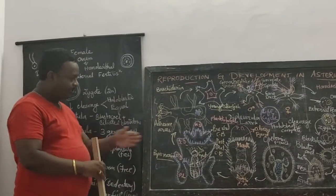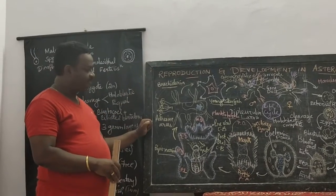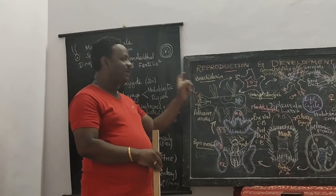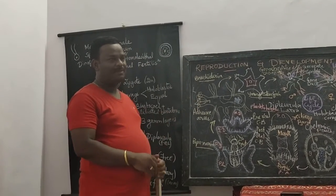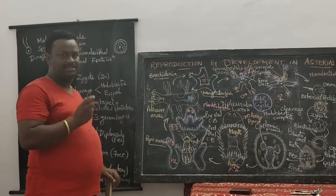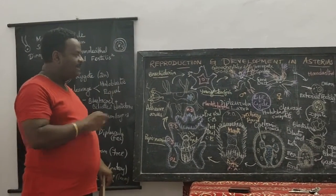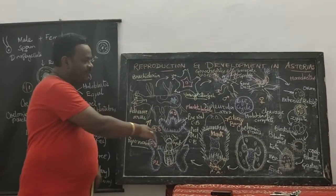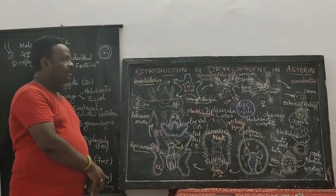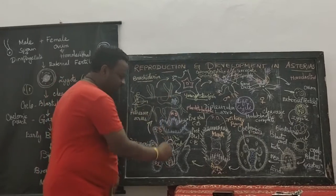During the metamorphosis process, the change of bipinnaria to brachiolaria shows several significant changes. All the larval stages of the organism Asterias are bilaterally symmetrical.